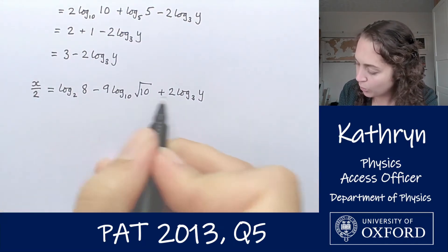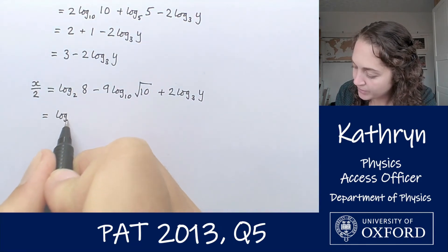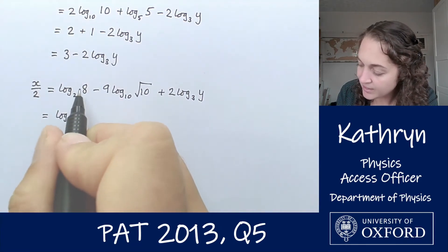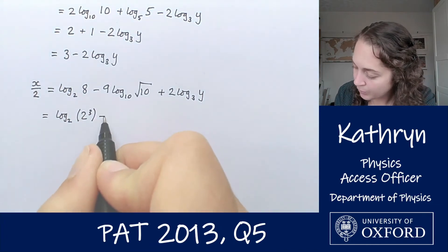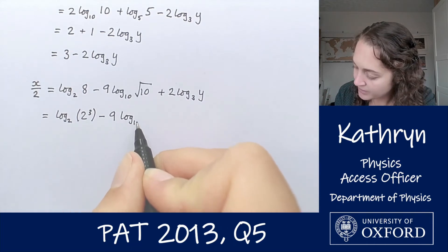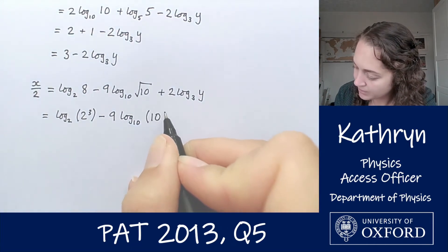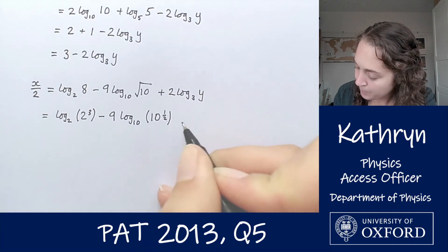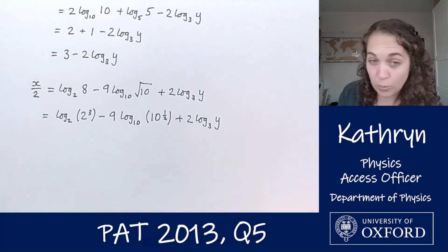Now how can we simplify this? Let's have a look at what's in these logs. We've got log base 2, 8 is 2 to the power of 3, then we've got minus 9 log base 10, square root of 10 we will rewrite as 10 to the half, and we've got plus 2 log 3 of y.